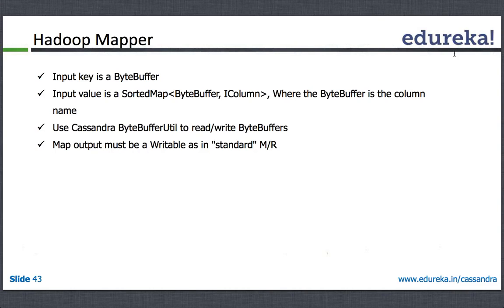Let's look at the Hadoop mapper. What happens in the Hadoop mapper? For using the Cassandra column input format, the mapper is going to basically get a byte buffer. A byte buffer is basically a Java class — it's the buffer for collecting bytes.